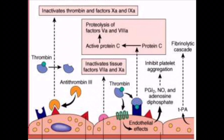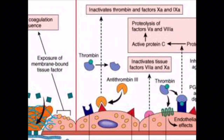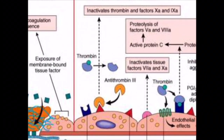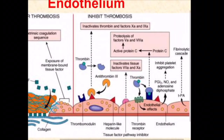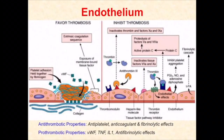Thrombomodulin binds with thrombin, which activates protein C; activated protein C then cleaves activated factors 5 and 8. Heparin-like molecules bind antithrombin, which in turn cleaves activated factors 9 and 10. Tissue factor pathway inhibitor inactivates activated factors 7 and 10. Tissue plasminogen activator activates fibrinolytics, altogether inhibiting thrombosis. Endothelium also produces prostaglandin I2, a platelet inhibitor, and nitric oxide, a vasodilator — all of which prevent thrombogenesis.